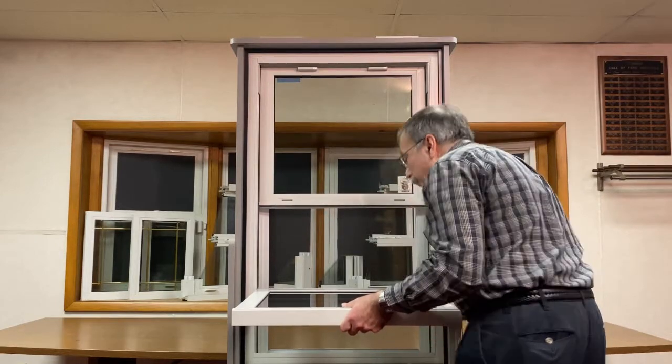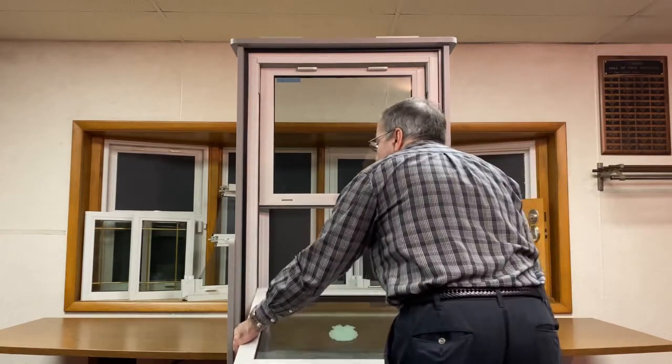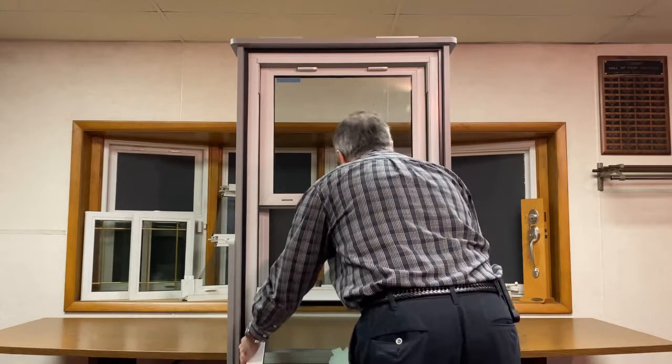Once those tamper locks are removed, you're going to be able to tilt the sash down to a 45 degree angle.